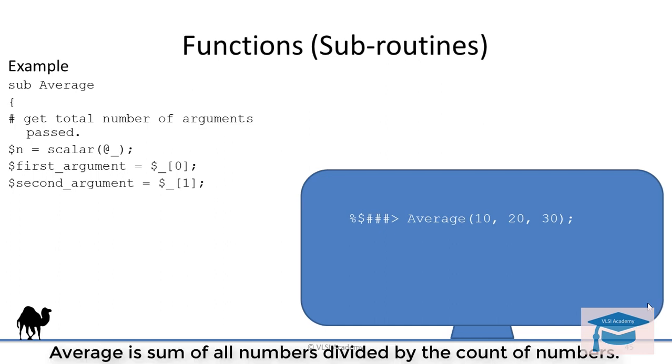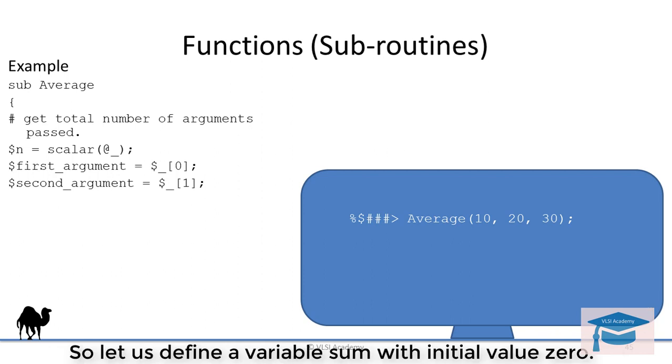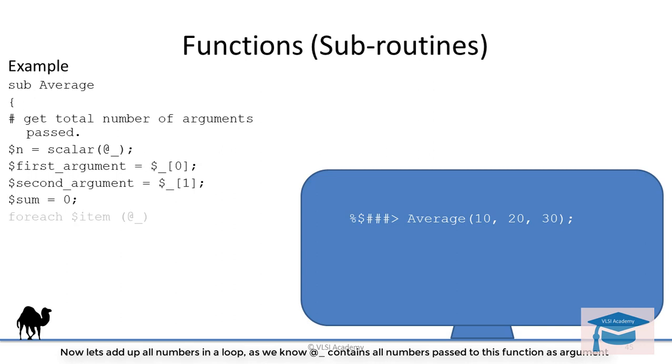Now, average is sum of all numbers divided by the count of numbers. So let us define a variable sum with initial value zero. Now, let us add up all numbers in the loop.